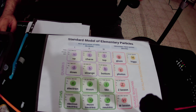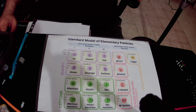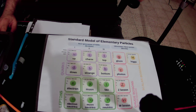The atom itself consists of electrons that orbit around the center of the atom. In the center of any atom we have the nucleus, which consists of protons and neutrons.